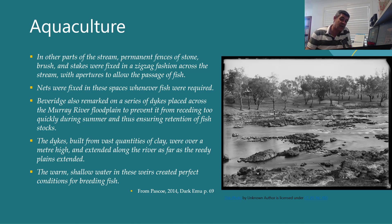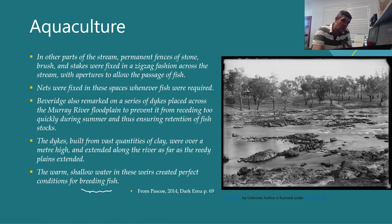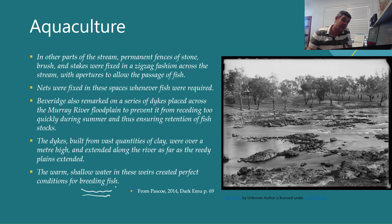The dikes, built from vast quantities of clay, were over a metre high and extended along the river as far as the Reedy Plains extended. The warm, shallow water in these weirs created perfect conditions for breeding fish. So this was genuine aquaculture — not just knowing where in the river to fish, but an active management of the food supply. It was a use of both stone and clay that the First Nations people were able to use to build these dams and weirs and to effectively farm fish for their use.